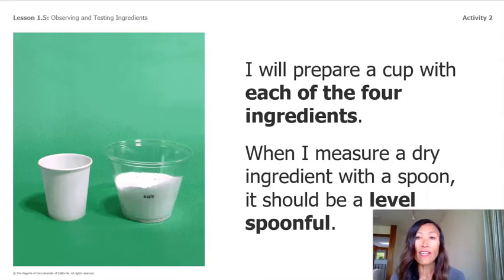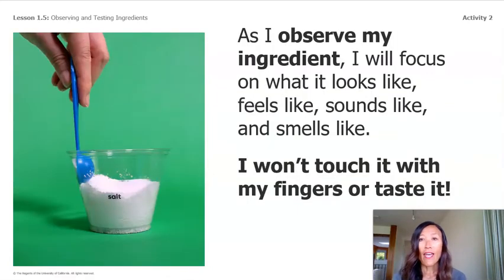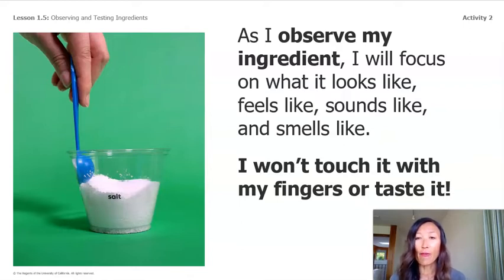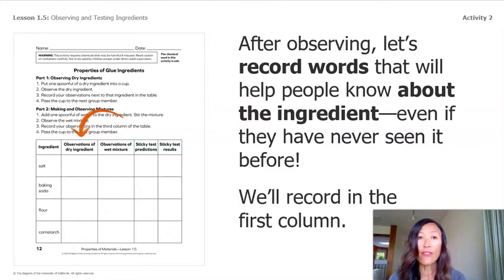I will prepare a cup with each of our four ingredients. When I measure a dry ingredient with a spoon it should be a level spoonful. As I observe my ingredient I'm going to focus on what it looks like, feels like, sounds like, and smells like. Remember, I won't touch it with my fingers or taste it. After observing, let's record words that will help people know about the ingredient even if they have never seen it before. We're going to use the first column: observations of dry ingredients. The first ingredient is salt.